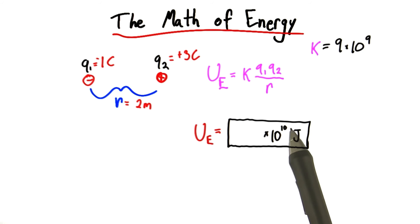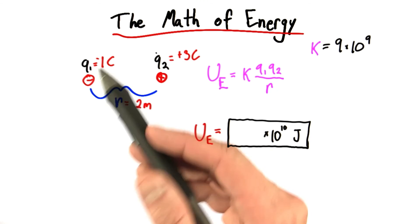I've already filled in the times 10 to the 10, because that's what your exponent is going to wind up being when you convert this to scientific notation. So can you just fill in this part here, what the potential energy ought to be? And be very careful with the sign.